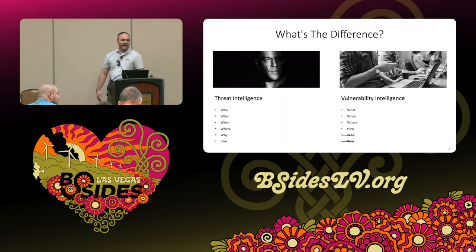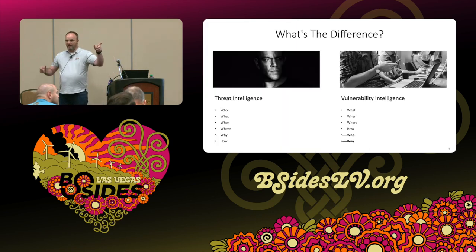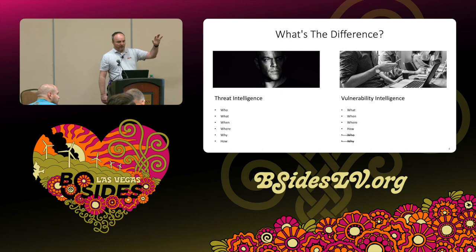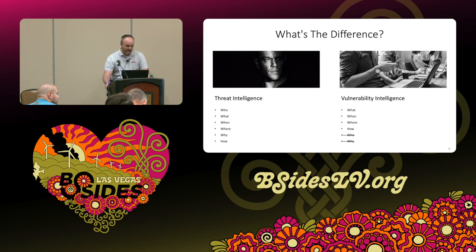Let's break that down. What's the difference between a threat intelligence feed and a vulnerability intelligence feed? A threat intelligence feed gives you all the five W's — the who, what, when, where, why, and how. Most organizations don't need to care about the who and the why, and that's what you're paying for with a threat intel feed.